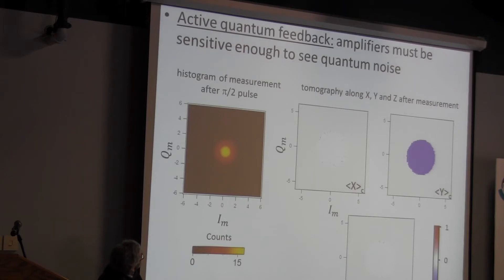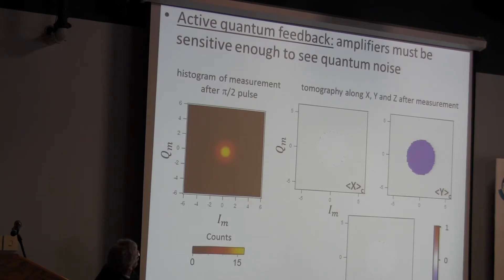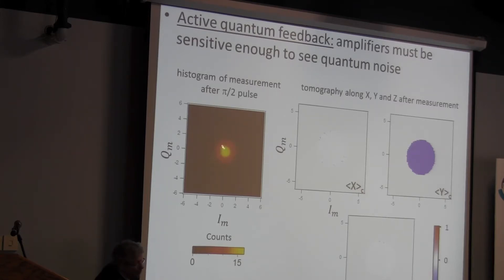Here's one little example of progress in building quantum-limited amplifiers. These are the two quadratures of the output of the cavity, I and Q. This is actually the vacuum state—no photons are being sent to the cavity; we're just listening to the vacuum. You see some spread in the quadrature amplitudes of I and Q being measured, and that spread is almost entirely vacuum noise—not extra noise added by the amplifier.